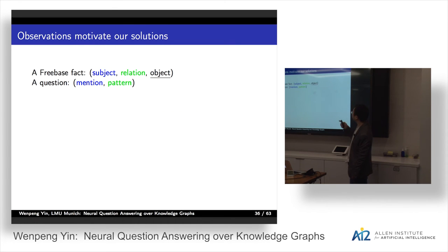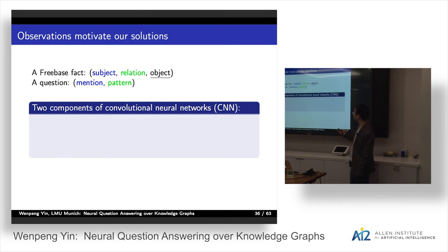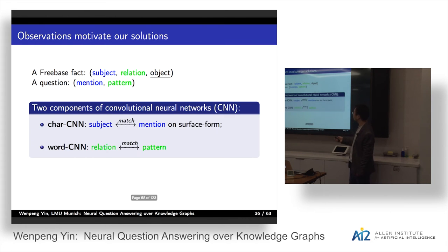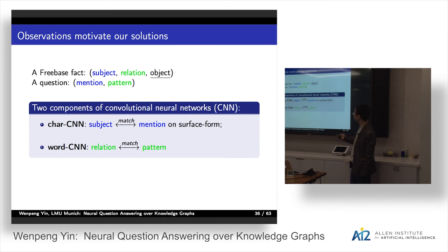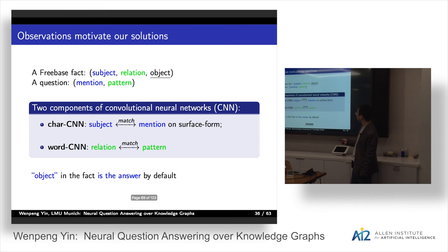Given a Freebase fact — subject, relation, object — and a question split into mention and pattern, we have two components in our convolutional network. The first is the character-level convolutional network, which matches the subject in the Freebase fact with the mention in the question on surface form. The second is the word-level convolutional network, which matches the relation in the fact with the pattern in the question. The object in the fact is the answer by default.